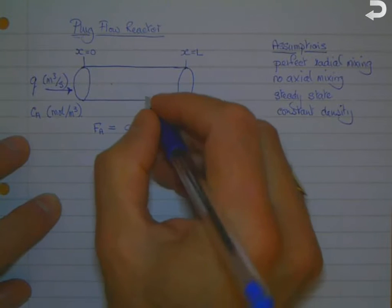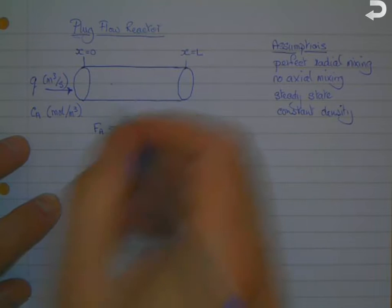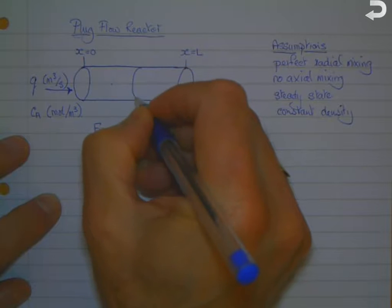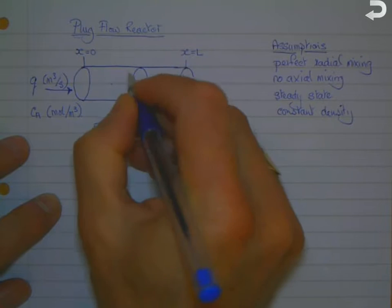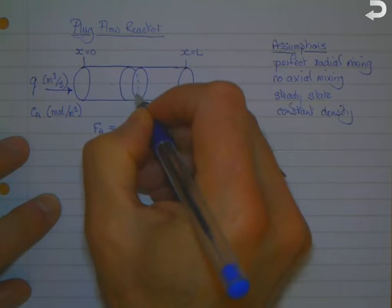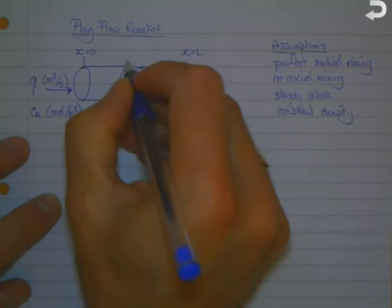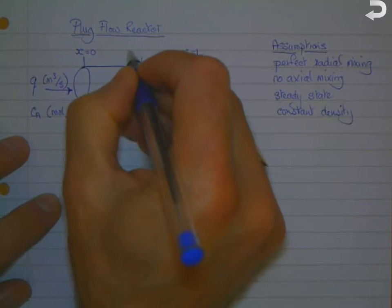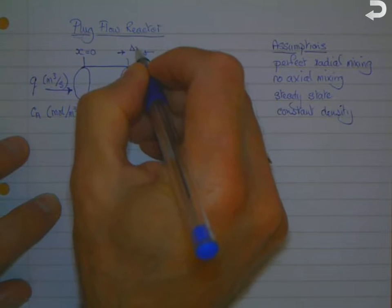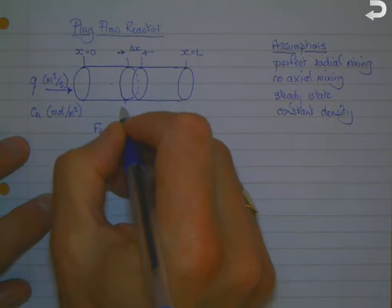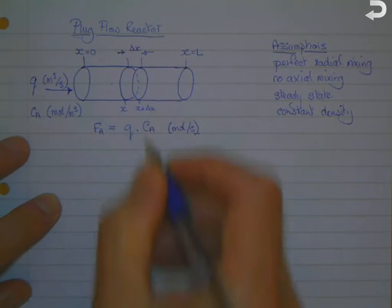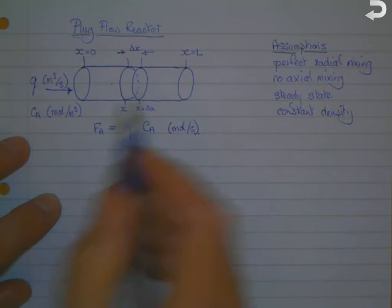Okay, and we're going to do the derivation now based on a small section of the reactor. So we're going to take a little segment of the reactor, and that segment we're going to say has got a length of delta x. So we've got distance x and that point would be x plus delta x. We're going to do a material balance across that section.